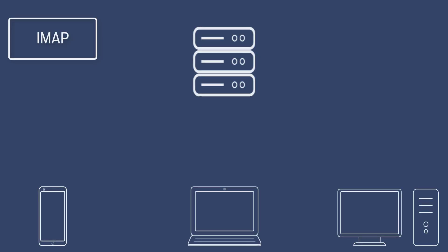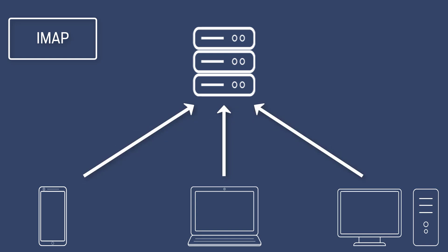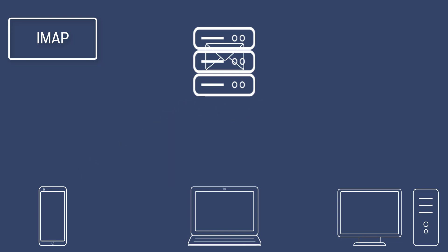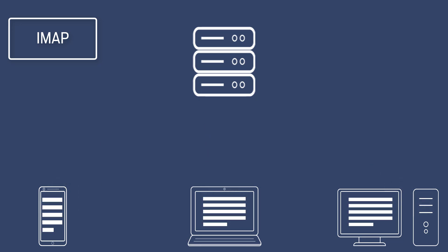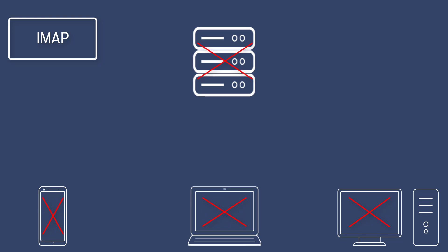Now let's take a look at IMAP. IMAP is more of a synchronisation, so any mail that are on the mail server will be synchronised with any mailboxes connected using IMAP. If you delete a mail off one of those devices, it will get deleted everywhere, on the server and on the other devices that are connected using IMAP. It can also synchronise your calendars and your contacts, so it makes managing your mailbox much easier if you have multiple devices.